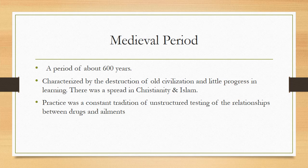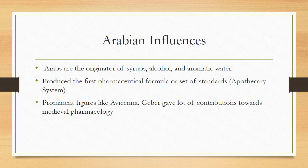The medieval period spans about 600 years, characterized by the destruction of old civilizations and little progress in learning. There was a spread of Islam and Christianity in this period, and practice involved a constant tradition of unstructured testing of relationships between drugs and ailments. Some progress was made. In the history of pharmacology, Arabs are the originators of syrups, alcohol, and aromatic water, and they produced the first pharmaceutical formula or set of standards. Prominent figures like Avicenna and Geber made great contributions to medieval pharmacology.